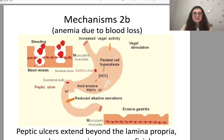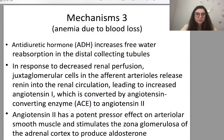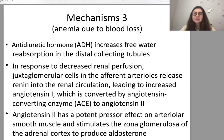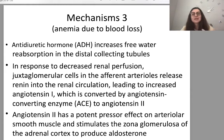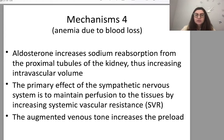All these mechanisms worsen anemia. In blood loss, antidiuretic hormone increases free water reabsorption in distal collecting tubules. In response to decreased renal perfusion, juxtaglomerular cells in the afferent arterioles release renin into the renal circulation, leading to increased angiotensin I, which is converted by angiotensin-converting enzyme to angiotensin II. Angiotensin II has potent pressor effects on arteriolar smooth muscle and stimulates the zona glomerulosa of the adrenal cortex to produce aldosterone. Aldosterone increases sodium reabsorption from the proximal tubules of the kidney.